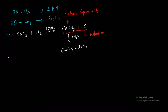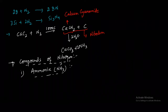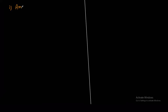Next, write down the compounds of nitrogen. The first compound is ammonia, NH3. It is the most important hydride of nitrogen and can be prepared by the following methods.